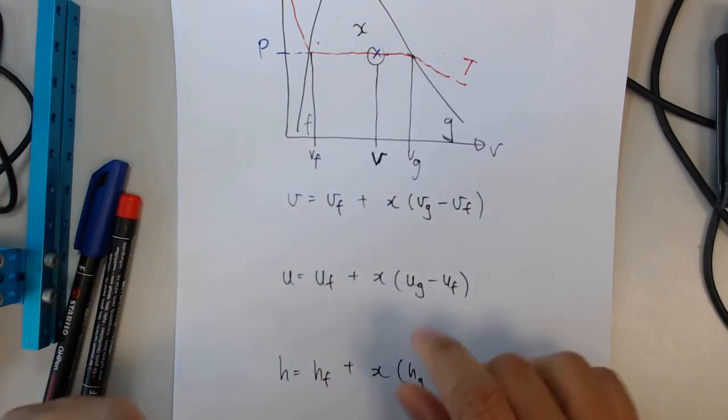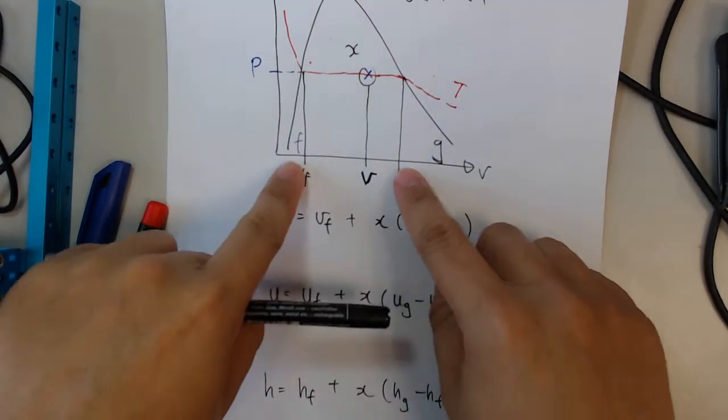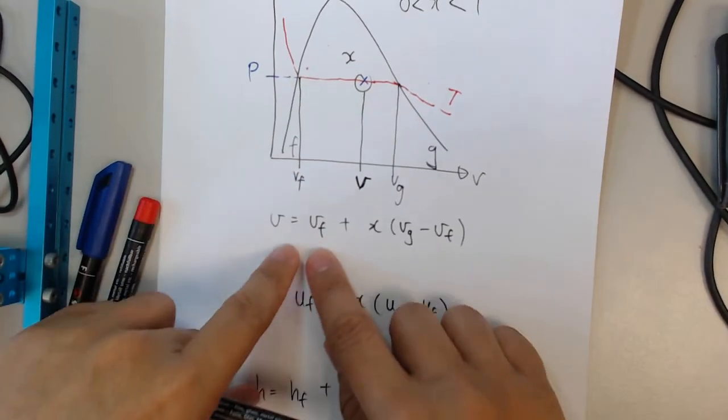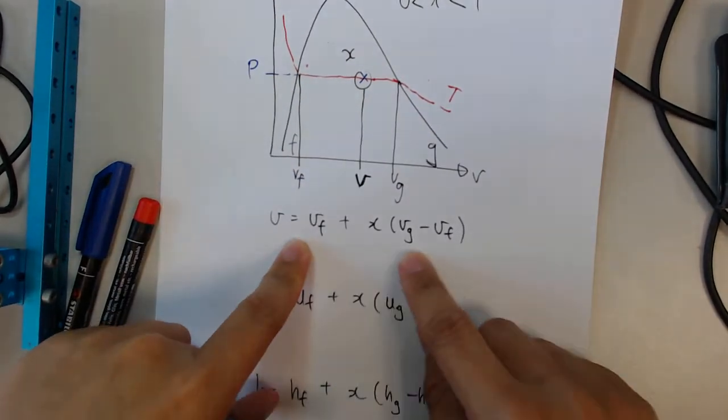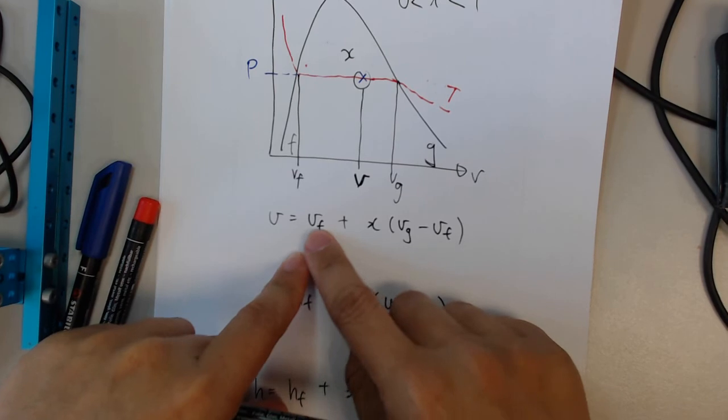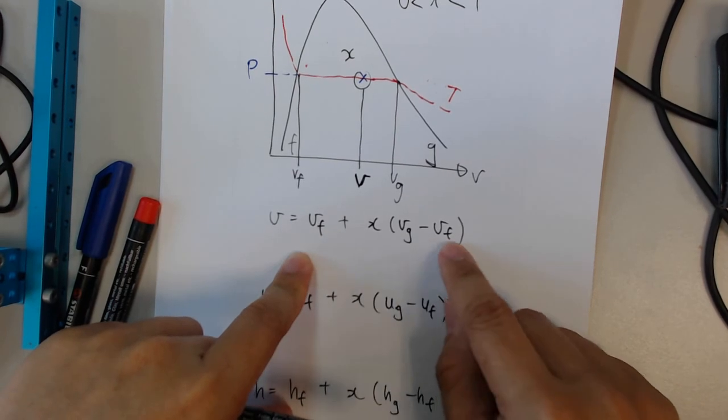So with the X, I'm able to do a kind of an interpolation in between these two values. And this will be how the equation looks like: Vf plus X Vg minus Vf.